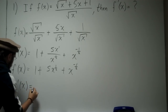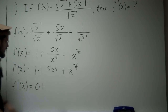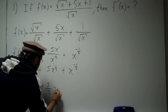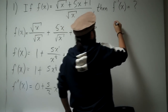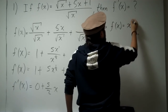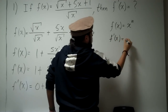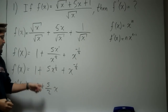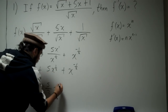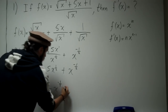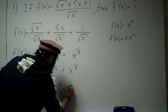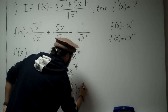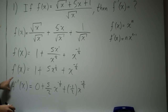So f prime of x: the derivative of 1 is 0. The derivative of 5x to the 1 half — bring the 1 half down, so we have 5 divided by 2, times x to the 1 half minus 1. Because we know if f of x equals x to the n, then f prime of x equals n times x to the n minus 1. So bringing the 1 half down and multiplying by 5 gives 5 halves, and 1 half minus 1 is negative 1 half. Plus, applying the rule to x to the negative 1 half: bring down negative 1 half, giving minus 1 half times x to the negative 3 halves.